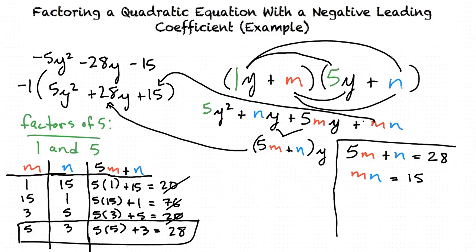So we can plug these into these factors. We'll have final factors 1y, such as y, plus 5 for m, times 5y plus 3 for n. And we cannot forget, at the end, we did factor out a -1 in the beginning. So to show that we did factor it out, we'll have a negative here. Our final answer will be negative times the factor (y + 5) times the factor (5y + 3).